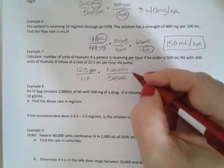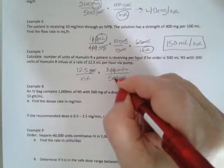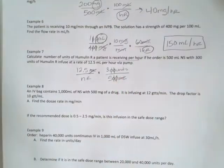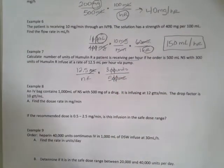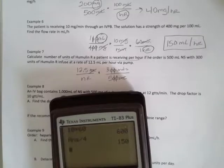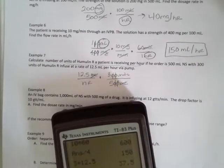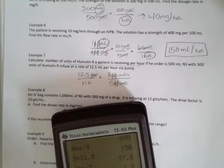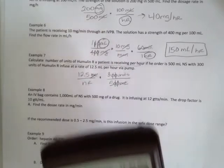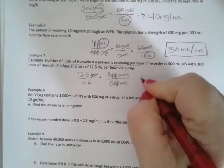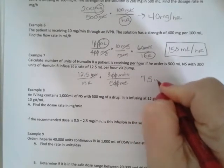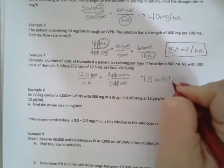So now it's just multiplication. I can cross out my two zeros up here with my two zeros down here. Three times 12.5 divided by five gives me 7.5 units per hour.